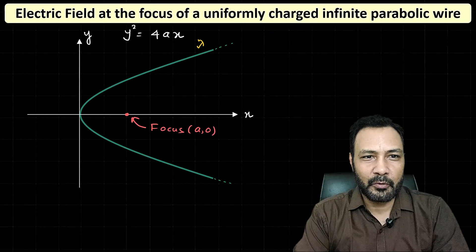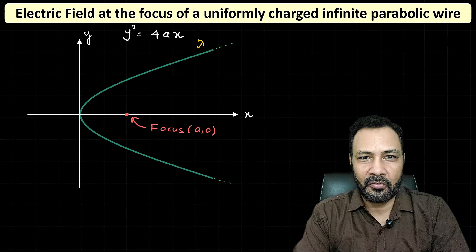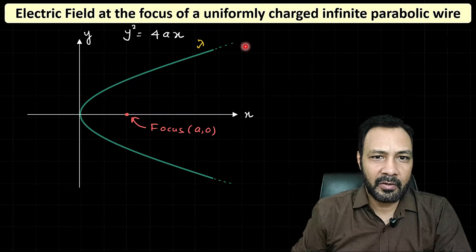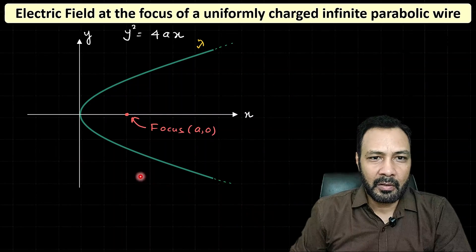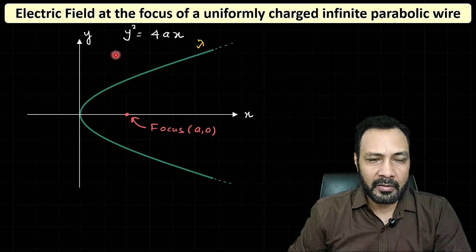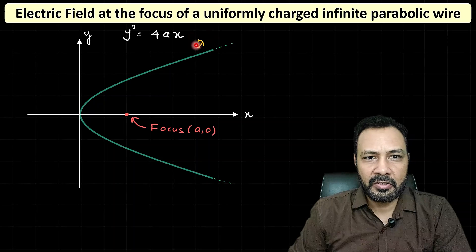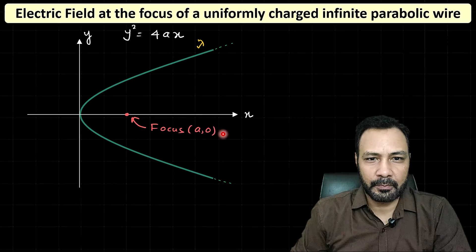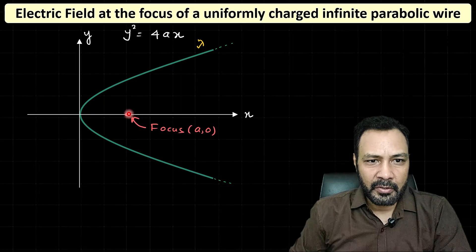Welcome to the Quantum Guru. In this video I want to derive an expression for the electric field due to a uniformly charged infinite parabolic wire at its focus. The equation of the parabola is in standard form: y² = 4ax. The linear charge density of the parabola is λ, and I want to find the electric field at its focus, whose coordinates are (a, 0).